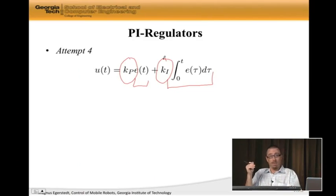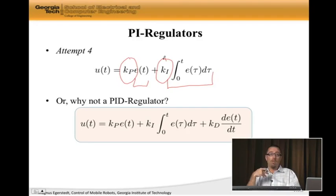Well, we take a derivative, right? We have proportion, we have integral, and we have a derivative. So why not produce what's called a PID regulator? So now we have a proportional term with a proportional gain. We have an integral part with an integral gain. And then we have a derivative part with a derivative gain. So this is an extremely useful controller that shows up a lot.